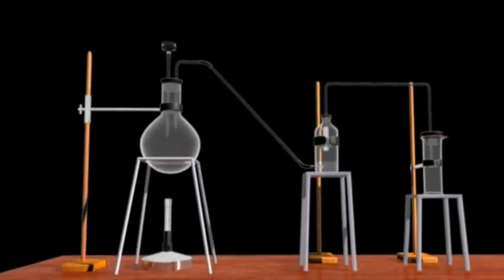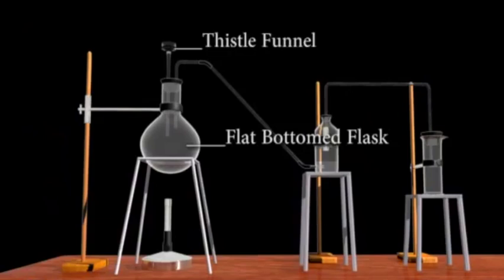For the preparation of HCl gas from a salt, we need reactants sodium chloride and concentrated sulfuric acid. We need apparatus like flat bottom flask, thistle funnel, burner, and beakers.